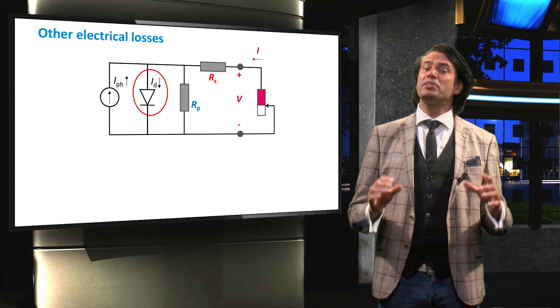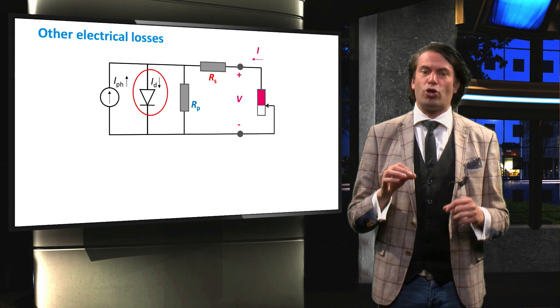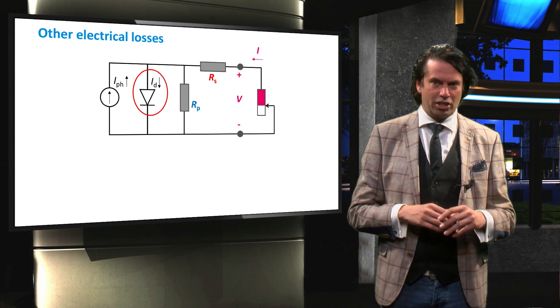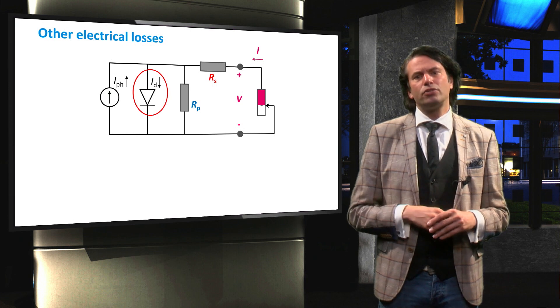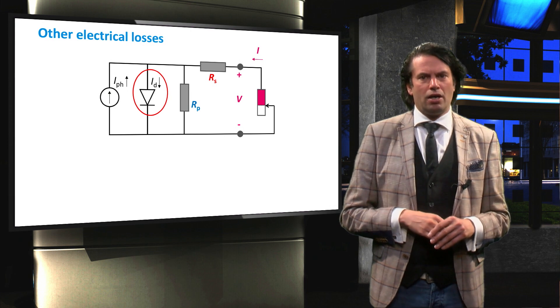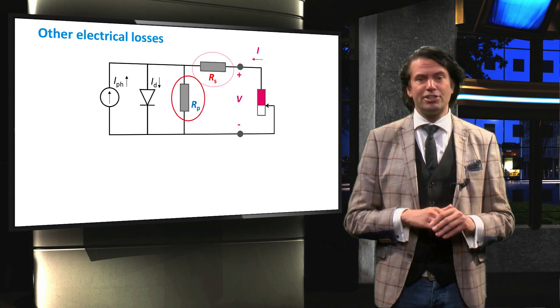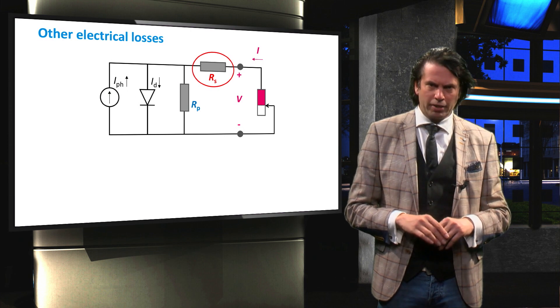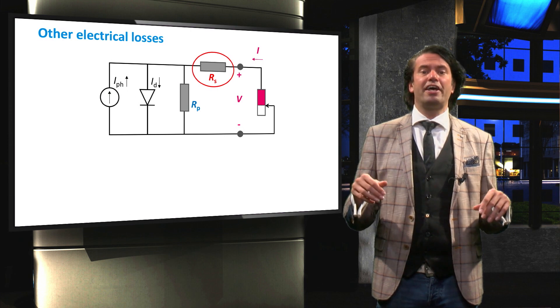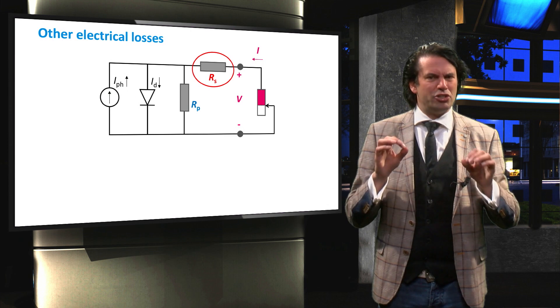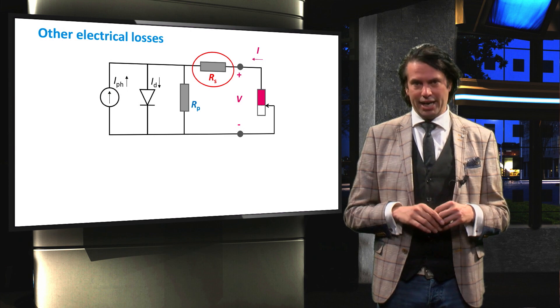This actually represents the recombination that occurs in the solar cell. Next we see two resistors, RP the shunt resistance and RS the series resistance. These two resistors are there because the solar cell is not an ideal diode.